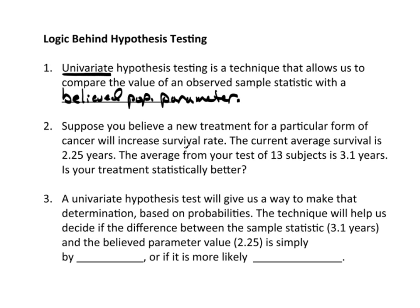In other words, we have what we believe is a population parameter — like the true mean, the true median, or true proportion — and we're going to compare a sample statistic with that value in a way that will help us suggest that maybe we're wrong about that mean. It really is something else, or that proportion really is something else — it's not what we used to think it was.